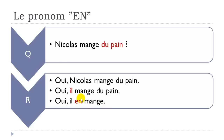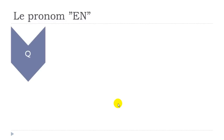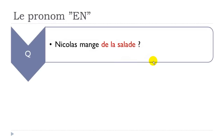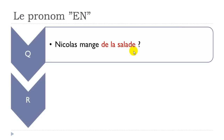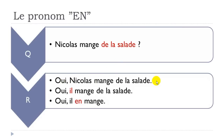The 'en' pronoun can also replace 'de' + noun of thing. Example: 'est-ce que Frédéric est content de son nouvel ordinateur?' → 'oui, il en est content' / 'non, il n'en est pas content.' 'Est-ce que Frédéric parle de son chef?' → 'oui, il en parle' / 'non, il n'en parle pas.' 'Est-ce que Frédéric a besoin de notre aide?' → 'oui, il en a besoin' / 'non, il n'en a pas besoin.' In negative form, 'ne' contracts before 'en' (a vowel): n'en.